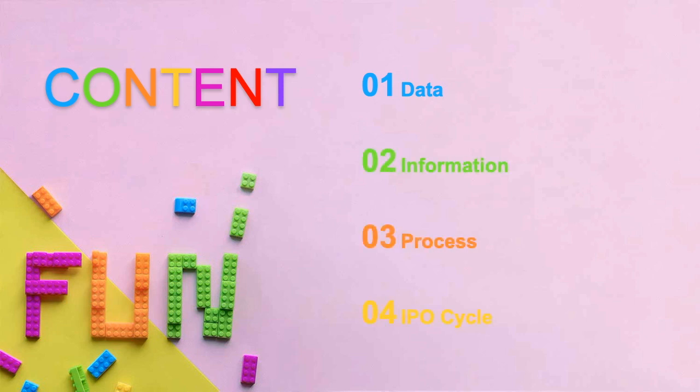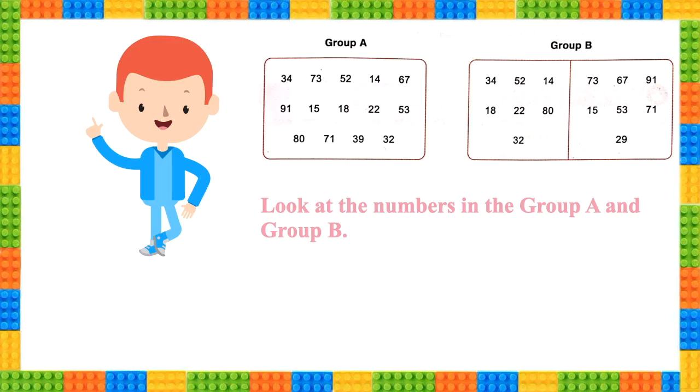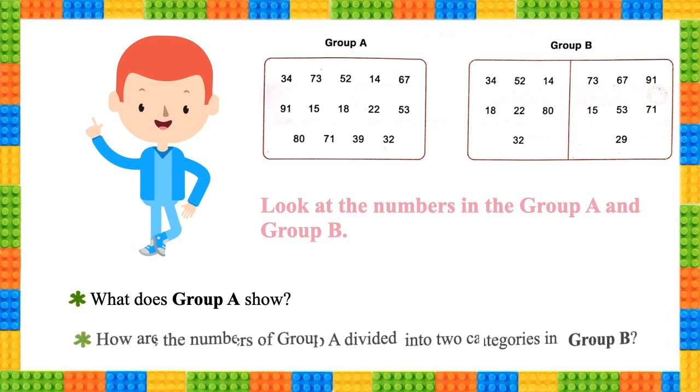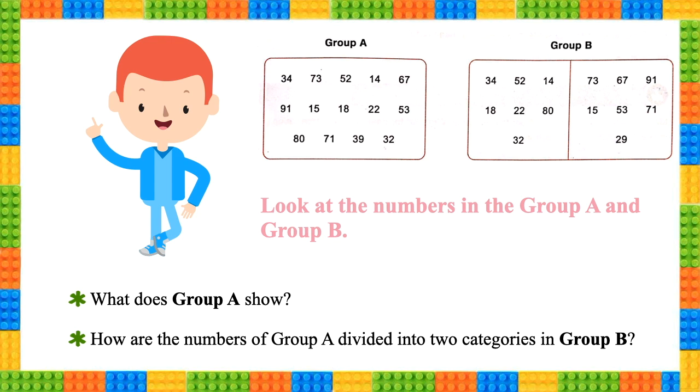Look at the numbers in Group A and Group B. What does Group A show? Group A shows us a set of random numbers which doesn't make any sense. How are the numbers of Group A divided into two categories in Group B? In Group B, the two categories are: on the right side are even numbers and on the left side are odd numbers.